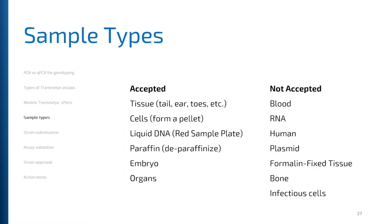Sample types we do not accept include: blood, RNA, any kind of human sample, plasmids, formalin-fixed tissue, bone, or any kind of infectious cells.